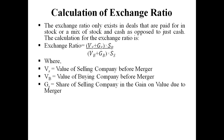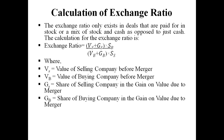GS is the share of the selling company in the gain on value due to merger — so whatever gain the selling company has through merger in terms of shares goes into GS. GB is the share of the buying company in the gain on value due to merger — so whatever gain the buying company has through merger in terms of shares goes into GB.